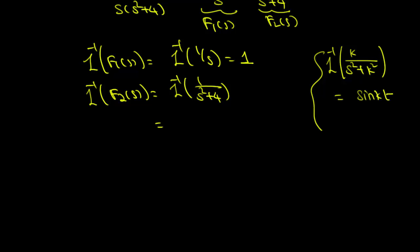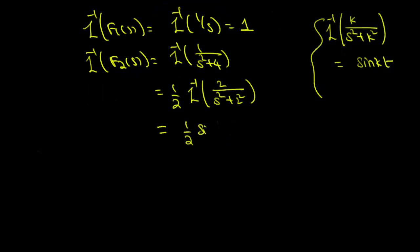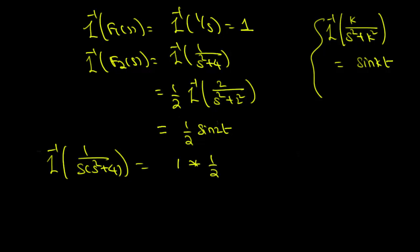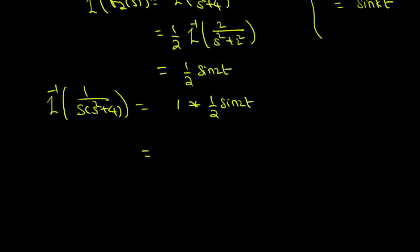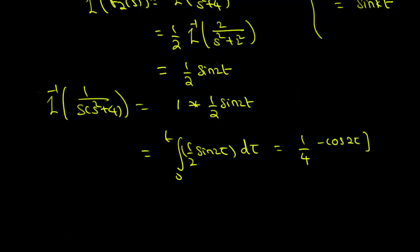So this is (1/2) times the Laplace inverse of 2/(s² + 2²), which equals (1/2)sin(2t). The convolution of 1 and (1/2)sin(2t) is the integral from 0 to t of (1/2)sin(2τ) dτ, which evaluates to (1/4)[-cos(2τ)] from 0 to t, giving (1 - cos(2t)) / 4.